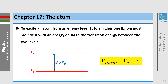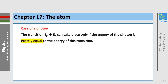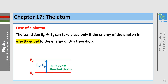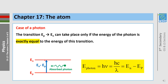To excite an atom from a lower energy level Ep to a higher one En, we must provide it with an energy equal to the transition energy between the two levels. The absorbed energy by the atom is equal to En minus Ep. This energy can be provided by a photon, but only if the energy of the photon is exactly equal to the transition energy: energy of photon = h·ν = hc/λ = En minus Ep.